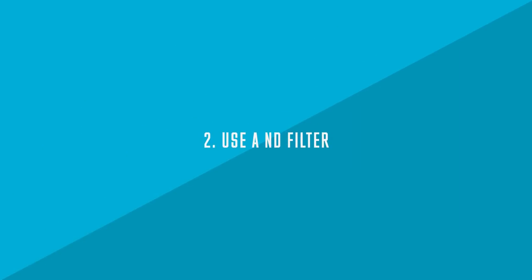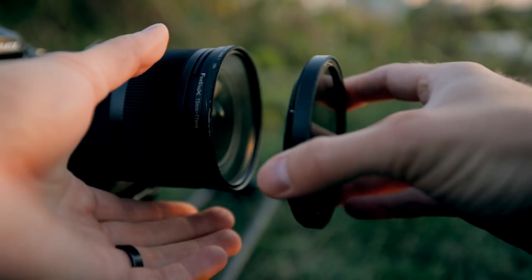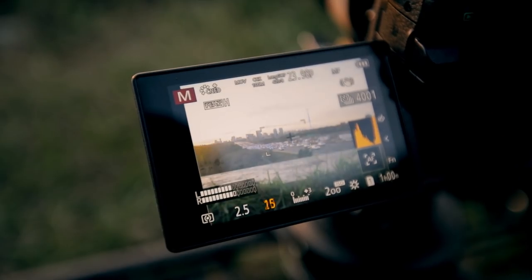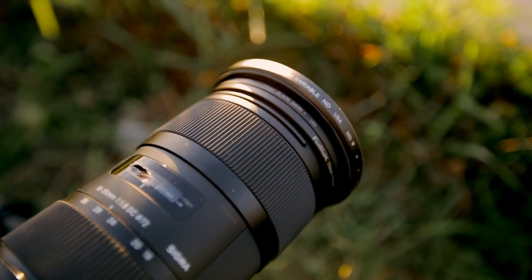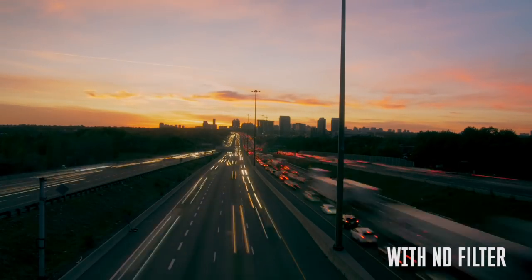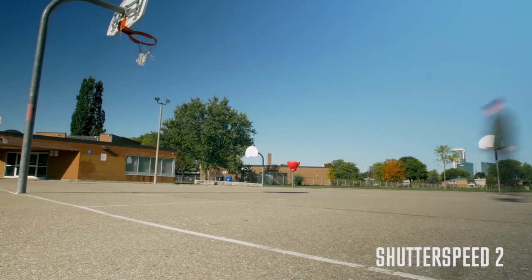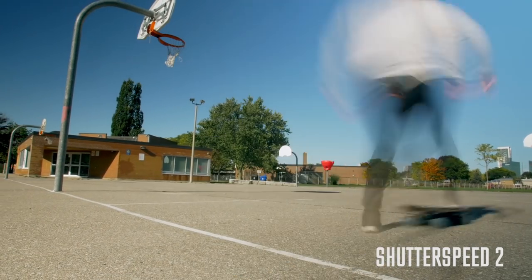Tip number two is to use an ND filter. One of the best things you can do is to slow down your shutter speed for time lapses. In order to shoot really slow shutter speeds, you need an ND filter or else you're gonna have way too much light coming in and everything is gonna be blown out. Stick on an ND filter, slow down that shutter speed and you're gonna get really nice motion blur, which makes your time lapses look way better. Here's an example of a normal shutter speed, and now the same video with a slower shutter speed — you can right away tell how much better it looks. You need that motion blur for really nice cinematic time lapses.